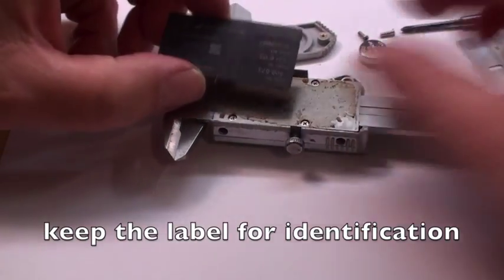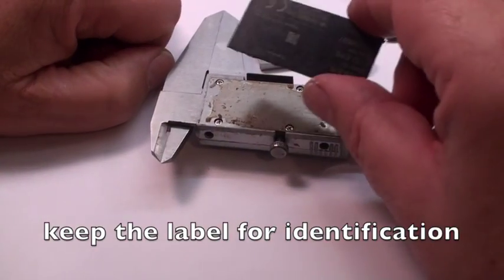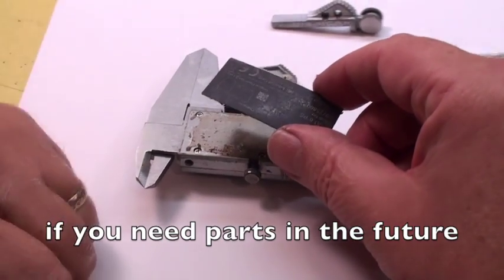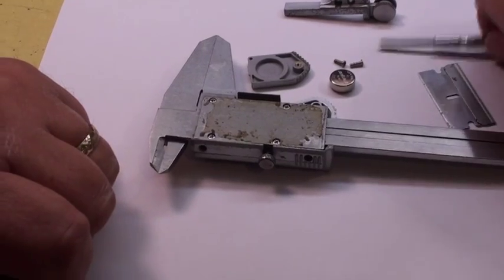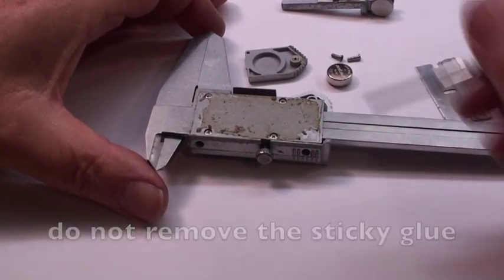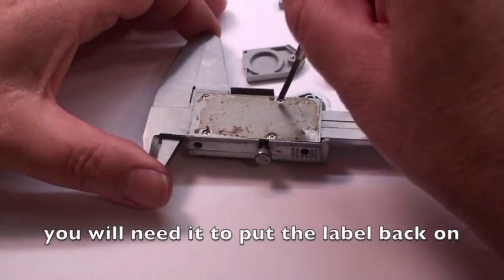You'll want to keep this because it identifies your caliper, so that in the future if you ever need parts you'll know what kind of model you have. There are the four screws. Don't wipe off the glue because you're going to use it again to put the label back on.